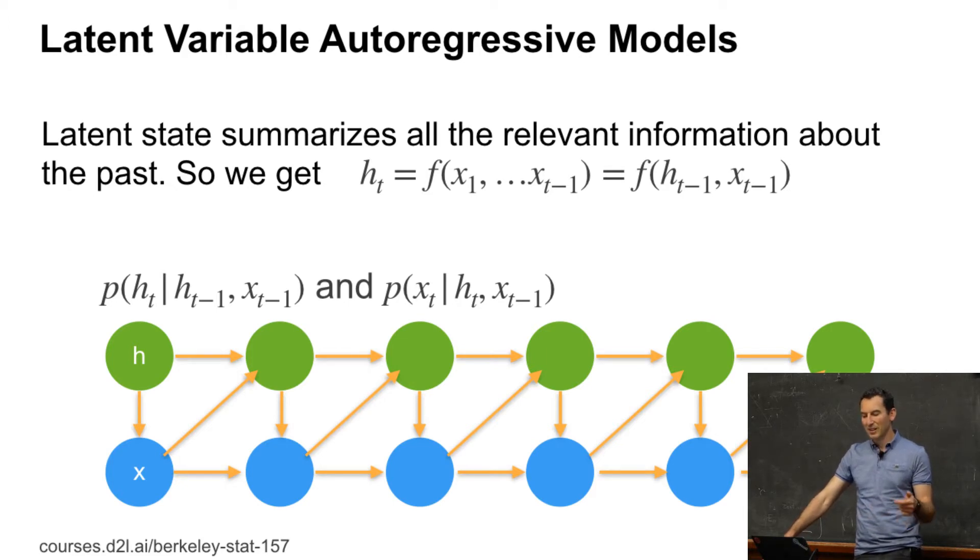P of HT given HT minus 1, XT minus 1 and also P of XT given HT and XT minus 1. And so we just move forward from the left to the right in this grid.